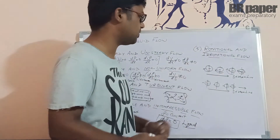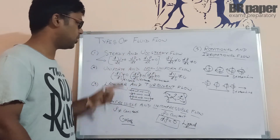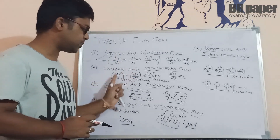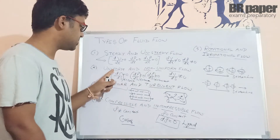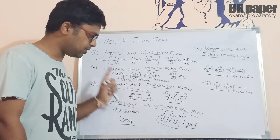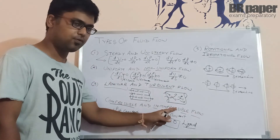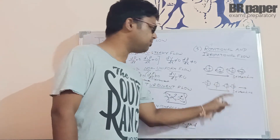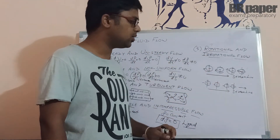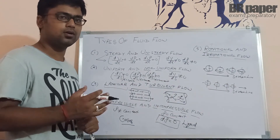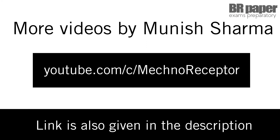So those are all 5 types of fluid flow: steady and unsteady (properties changing with respect to time), uniform and non-uniform (properties changing with respect to space at the same instant of time), laminar flow (streamlines parallel to each other), turbulent flow, incompressible flow (density constant) vs. compressible flow (density not constant), and rotational vs. irrotational flow (particles rotating about their own axis). That is all for today. For more videos on mechanical engineering, please subscribe to my channel — the link is given in the description below. Thank you.